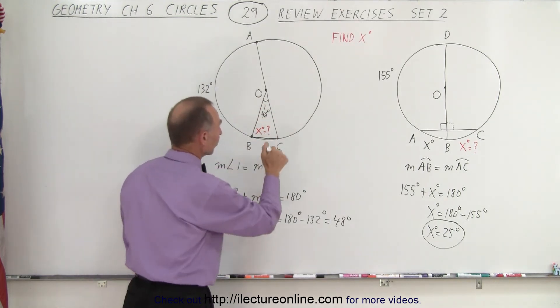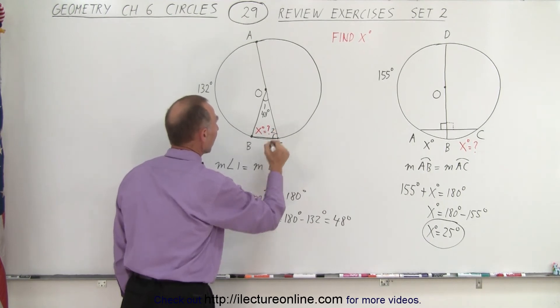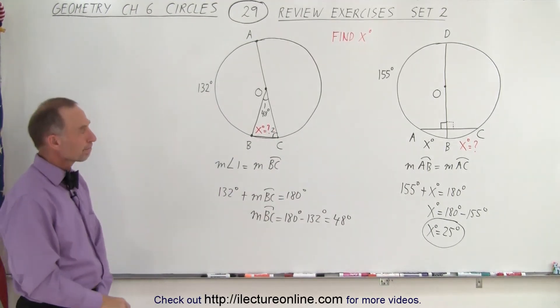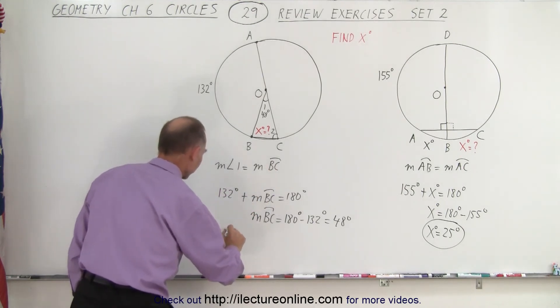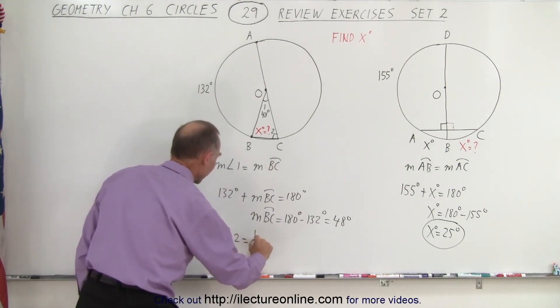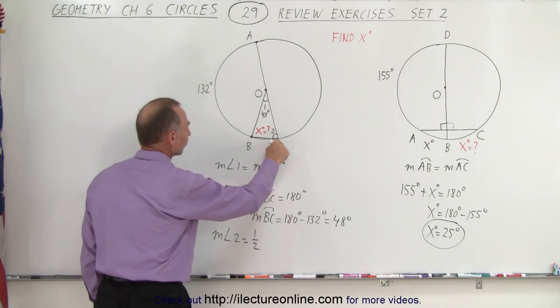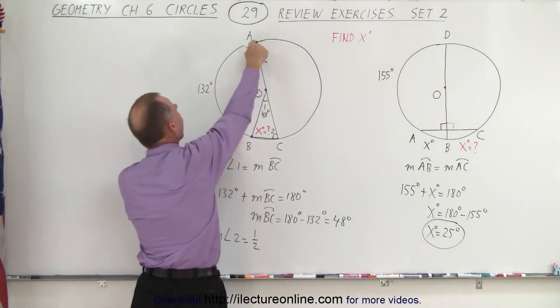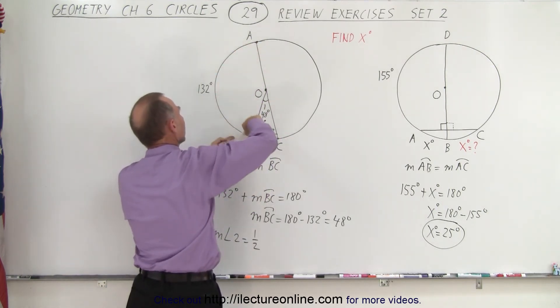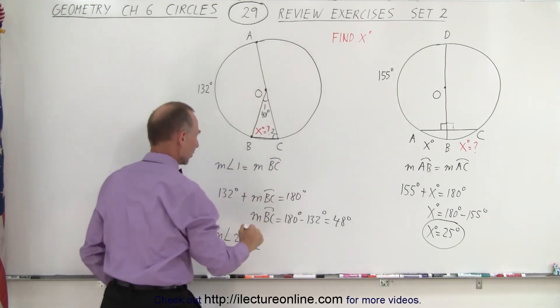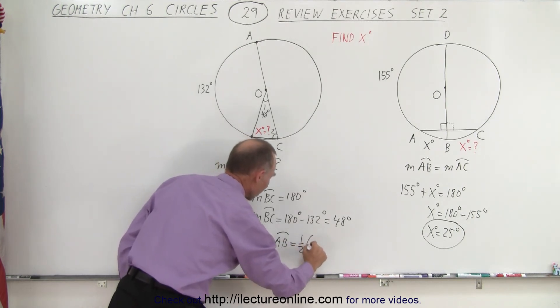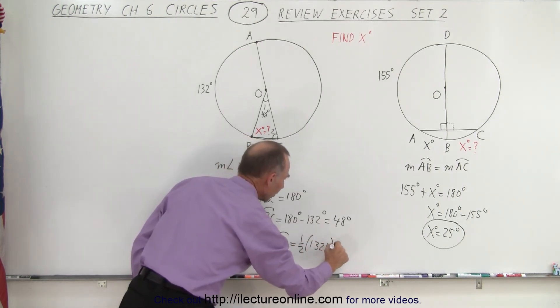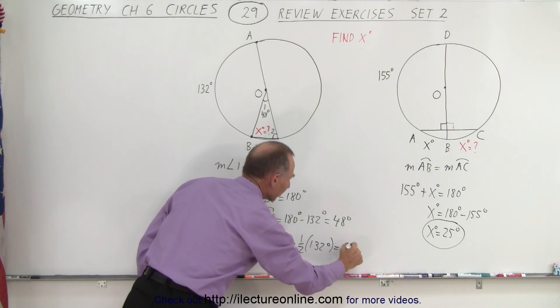Now, can we find out the measure of this angle? Let's call this angle two. Well, yes, because we can say that the measure of angle two is equal to one-half because it's on the edge of the circle. It's one-half the measure subtended by this arc right here from A to B. So it's one-half the measure from A to B, which means it's one-half 132 degrees, which is 66 degrees.